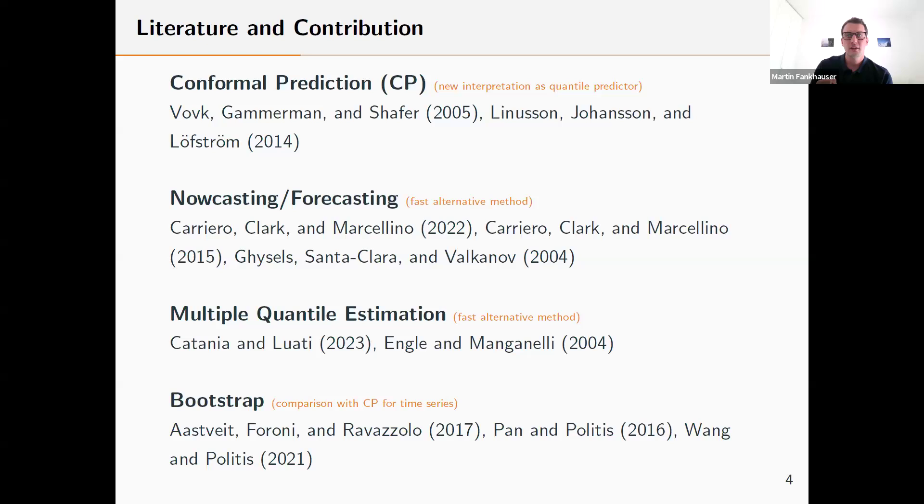In particular, I will show results in simulations and for the nowcasting example where I show that the bootstrap has some issues with high dimensional problems, whereas the conformal predictor seems to work well regardless of the dimensionality of the point predictor. This contributes to a literature, for example Wang and Politis is also comparing different kinds of conformal predictors with the bootstrap, however not in this time series context I'm considering and not in these high dimensional problems.